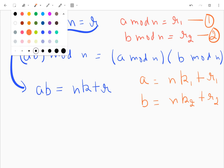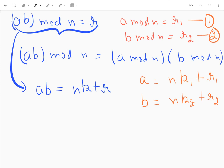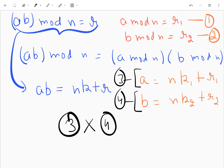And now what I will do is that this and this I will take it to be three and this is four and I will multiply that. So what I'll get is ab equals n k1 plus r1 into n k2 plus r2.